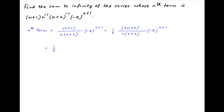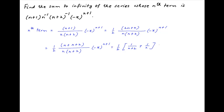Now multiply and divide by 2. We get half of 2n plus 2 divided by n times n plus 2, multiplied by minus x raised to the power n plus 1. The term 2n plus 2 in the numerator can be expressed as n plus n plus 2, and therefore the nth term can be written as half of, in brackets, 1 upon n plus 2 plus 1 upon n, multiplied by minus x raised to the power n plus 1.